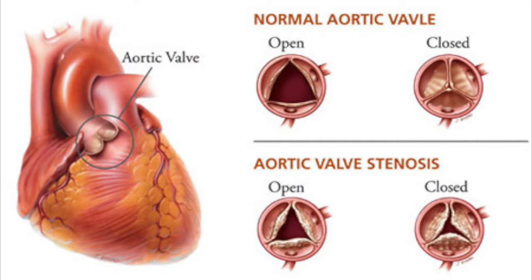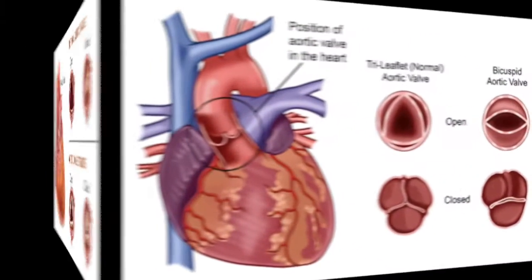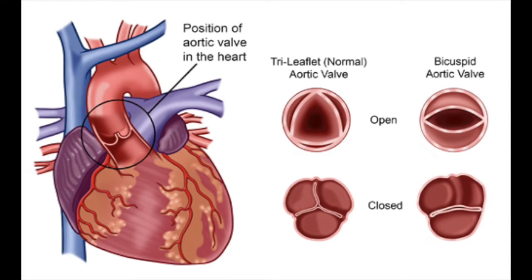Aortic stenosis is a valvular heart disease characterized by narrowing of the opening of the aortic valve. The most common cause of stenosis is age-related calcifications. A congenital bicuspid aortic valve also predisposes to calcifications of the valve earlier in life.